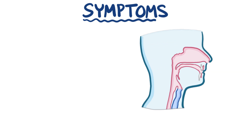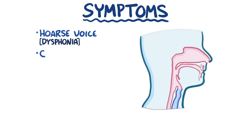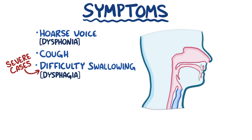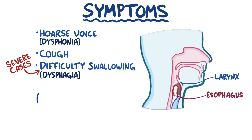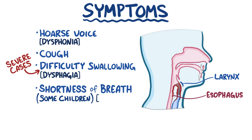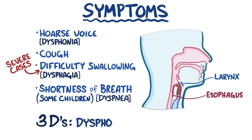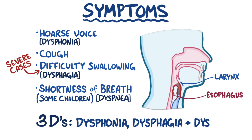The main symptoms of laryngitis include hoarse voice or dysphonia, as well as cough. In severe cases it can lead to difficulty swallowing or dysphagia, because the swollen larynx might compress the esophagus. Some children have shortness of breath or dyspnea, since they have smaller airways. So laryngitis comes down to the three Ds: dysphonia, dysphagia, and dyspnea.